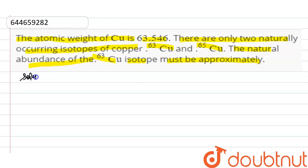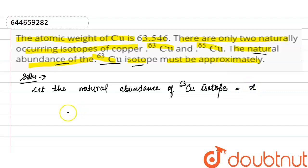Let's see the solution of this question. Here we have to calculate natural abundance of the copper-63 isotope. So, let the natural abundance of copper-63 isotope be X.